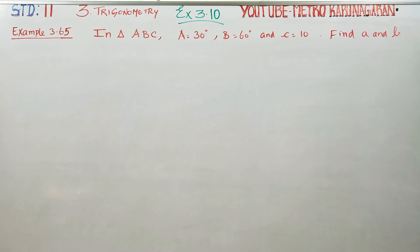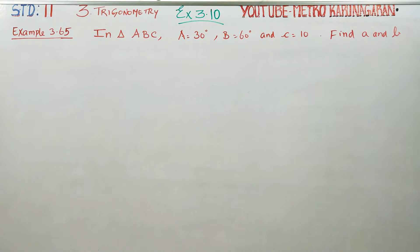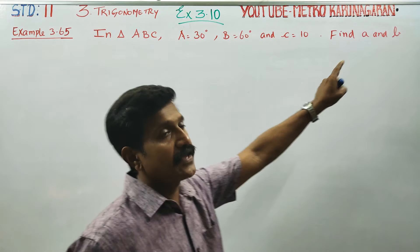Dear Learn Standard Students, I am Metro Karanagaran. In exercise number 3.10, example 3.65 in triangle ABC, angle A is 30°, angle B is 60°, and side c is 10. They are asking us to find the values of a and b.